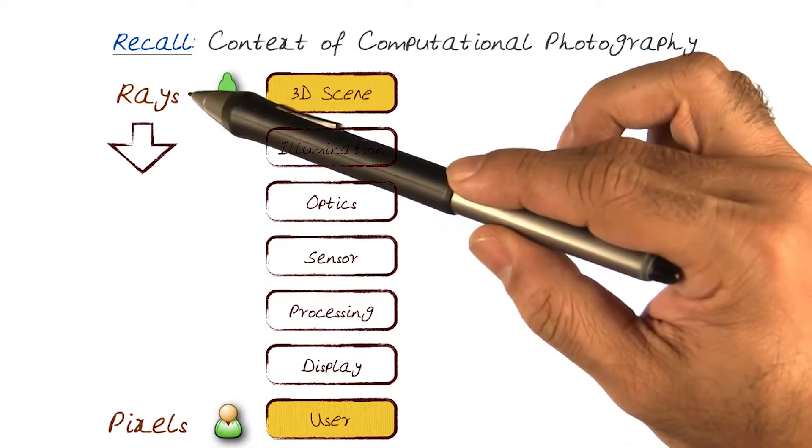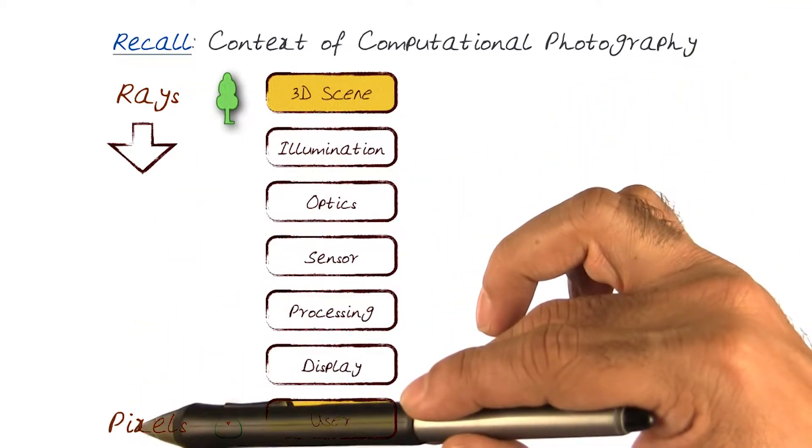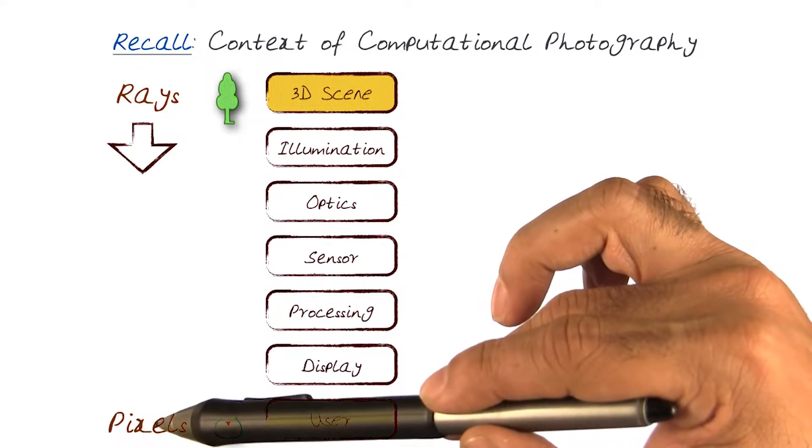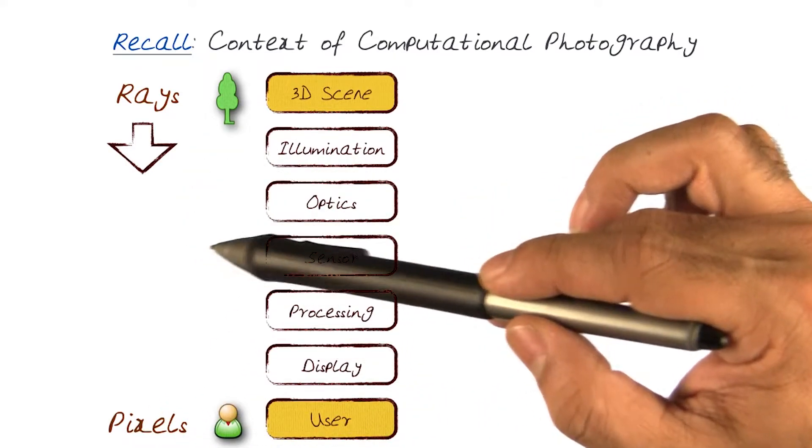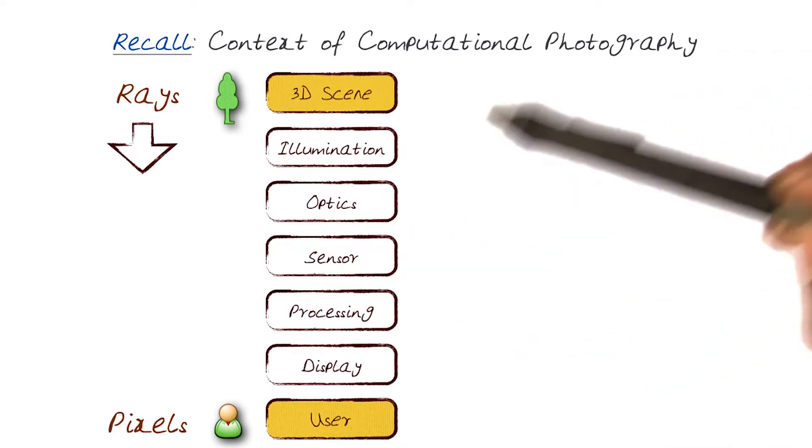The thing I want everybody to remember is that we're interested in going from rays of light in a 3D scene to generating pixels that can be used for various types of computational processes. Of course, we want the computational processes to also impact illumination, optics, and sensors, not just image processing.